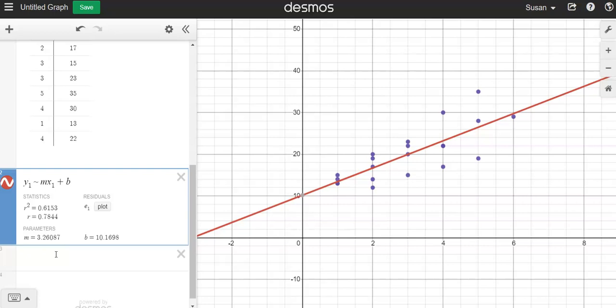And then b is 10.17 approximately. b is your y-intercept of your line. This would represent a student who didn't take any math classes. They would be expected to score about a 10, which is interesting because that's about right. They give you a 10, I think, automatically or something close to that. So even if you just guess.